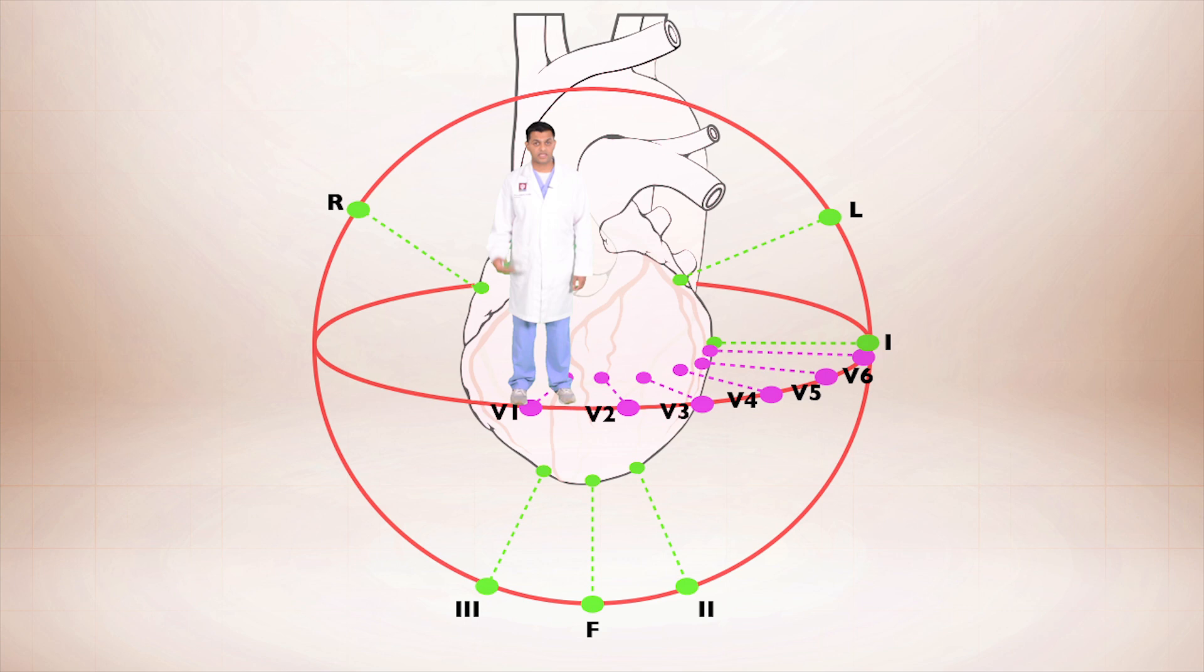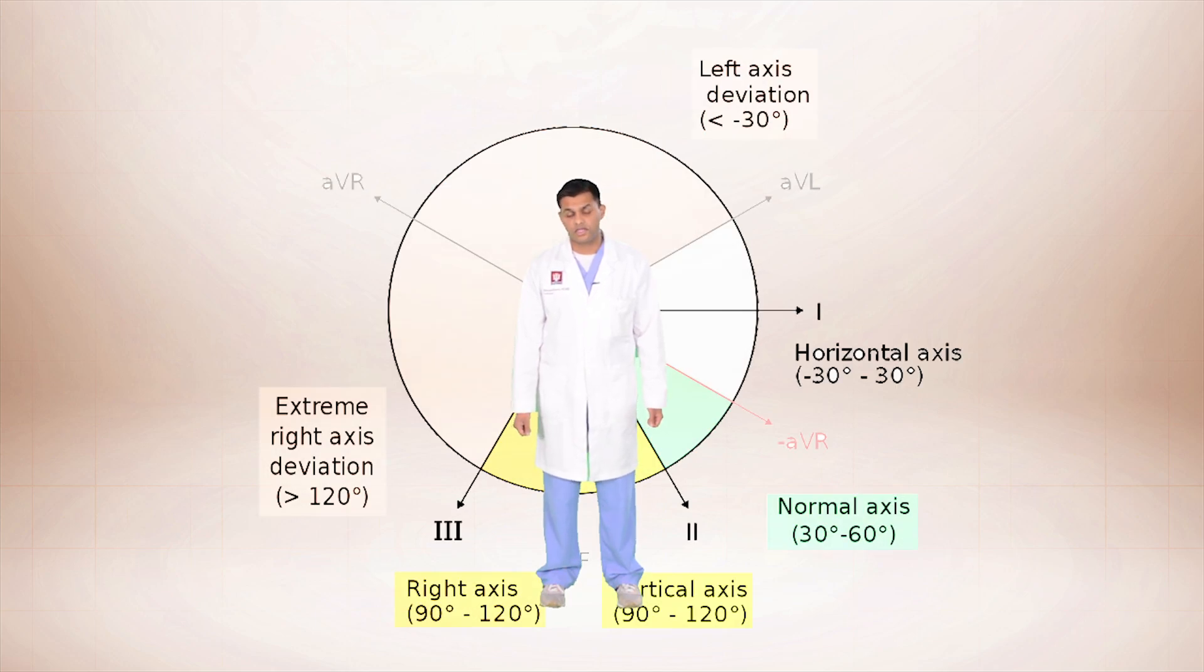Now let's take a look at how we can use the leads to tell us about the axis, or the flow of electricity for the heart. So we hear a lot about axis. What is axis? It simply represents the average flow of electricity through the heart. Your normal heart leans down and to the left. So it makes sense that the average flow of electricity is also going to be down and to the left. And we can take a look at the EKG to kind of tell us which direction the flow of electricity is through the heart.